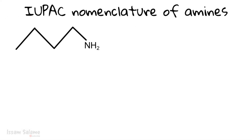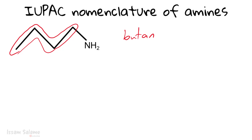To use IUPAC nomenclature to name an amine, we have to look for the longest chain. Here the longest chain is made up of four carbon atoms, so it is going to be called butane — but instead of writing the final 'e' we write 'amine.' Since the amino group is connected to the first carbon, we call it 1-butanamine. In some books it is written as butan-1-amine — both are accepted.